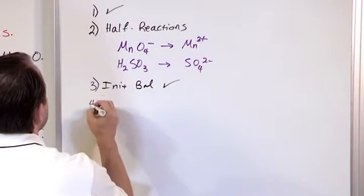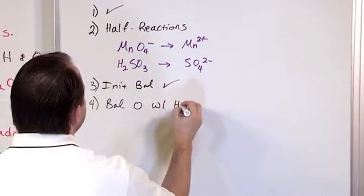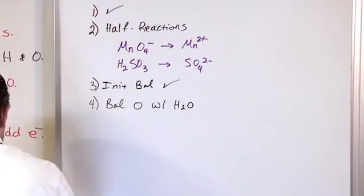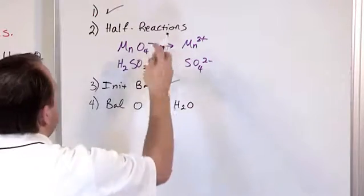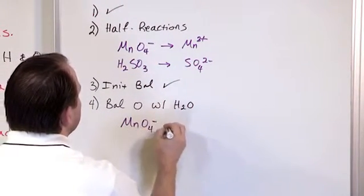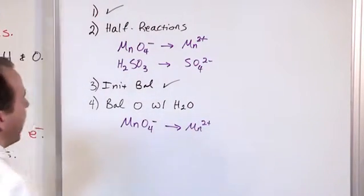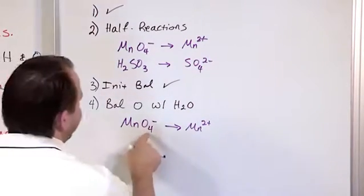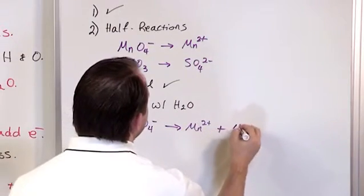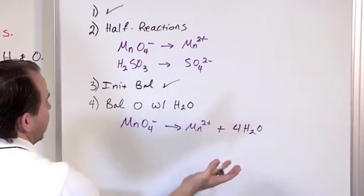So then step four is to balance the oxygen with H2O, with water. So on the very first reaction, let's write that down. MnO4- going to Mn2+. So we're balancing oxygen with water. Here I have four oxygens. So I'm going to need four waters like this. And that's it. There's no more oxygen.